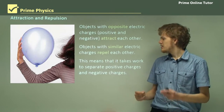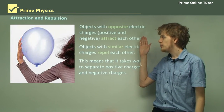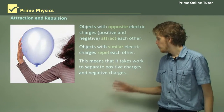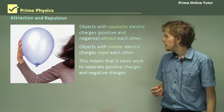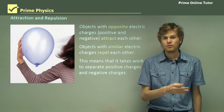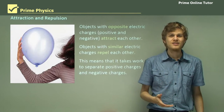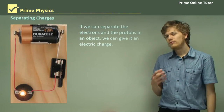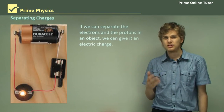So what this means is that it takes work to separate opposite charges from each other, or to move like charges closer together. Work just means that we expend energy in order to complete the process. So if we have two objects with opposite charges, like a proton and an electron, and we want to separate them, then we need to spend energy to do it. Now if we can separate the electrons and the protons in our object, we can intentionally give that object an electric charge.